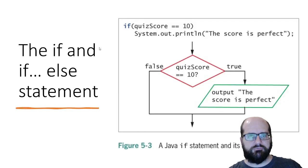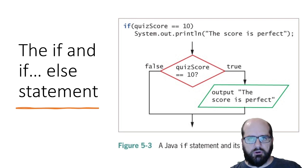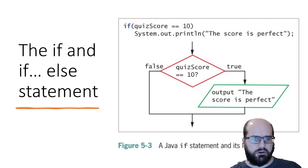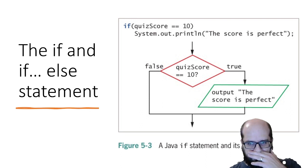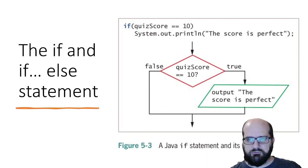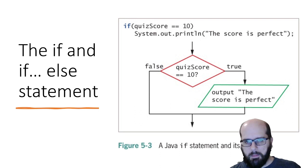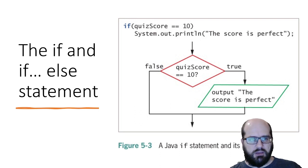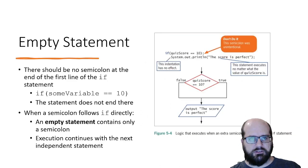It looks like this: if quiz score equals 10, then print 'the quiz score is perfect.' If it is true, it goes to 'the score is perfect.' Otherwise, nothing happens. That's the Java if statement and its logic.